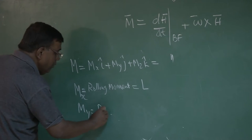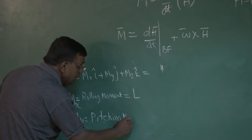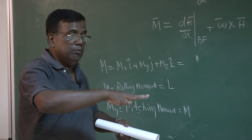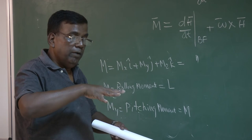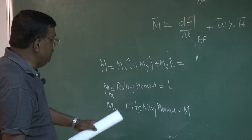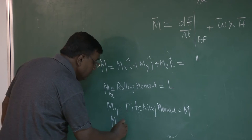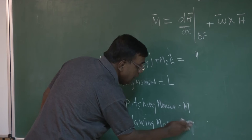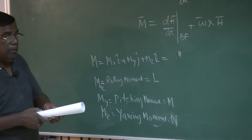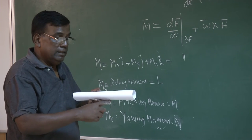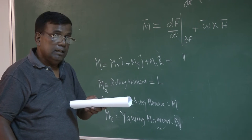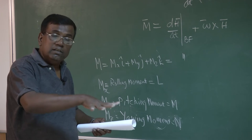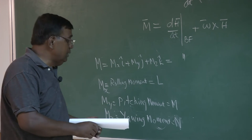My is the pitching moment — motion about the y-axis; the airplane pitches like this. By convention, if I fly with the machine, nose up is positive. The notation used in aerospace is M. And Mz, the yawing moment, is denoted by N — that is the moment about the z-axis. Convention: if the right wing is going back, that is positive yawing moment; if the left wing is going back, that is negative yawing moment. So these are L, M, and N.